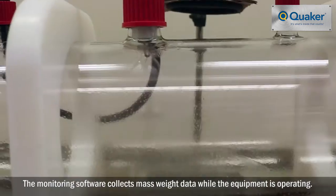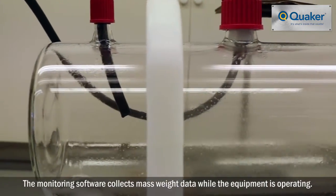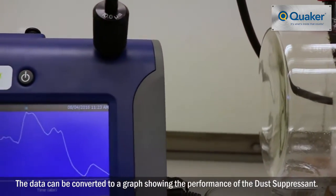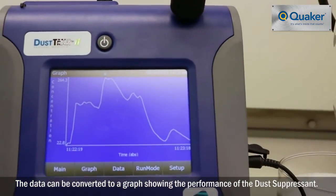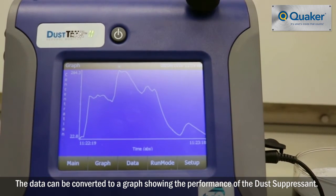The monitoring software collects mass weight data while the equipment is operating. The data can be converted to a graph showing the performance of the dust suppressant.